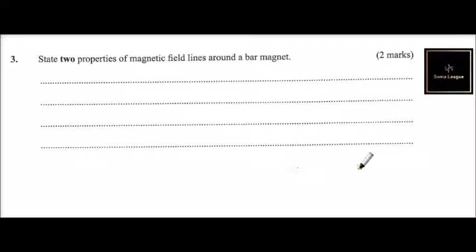So a bar magnet looks like this. This is a bar magnet. We can say this is our north, this is our south. We have the magnetic field lines, so they are like that.